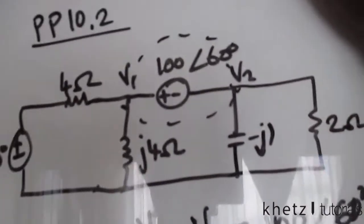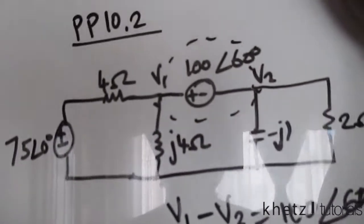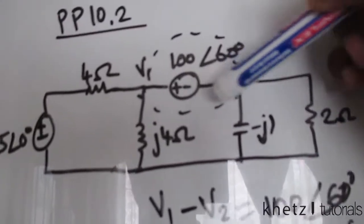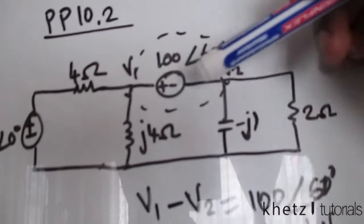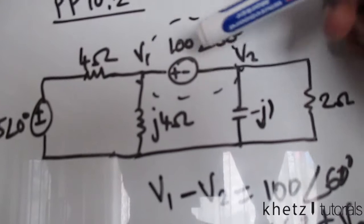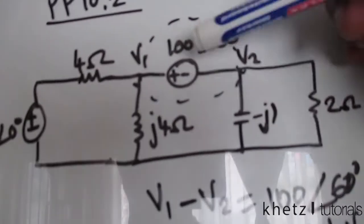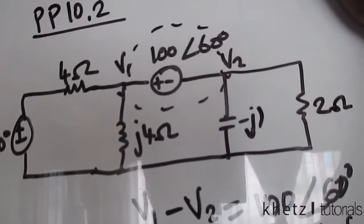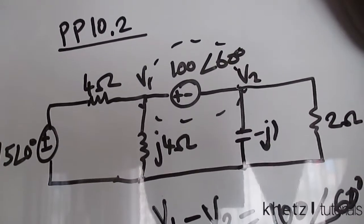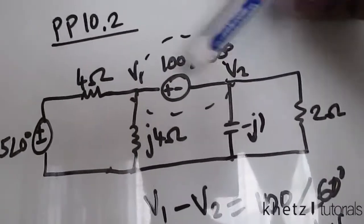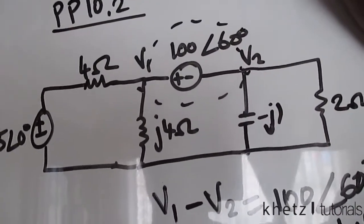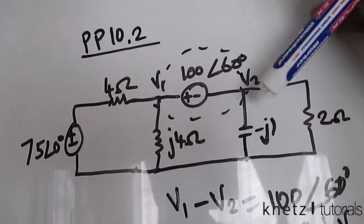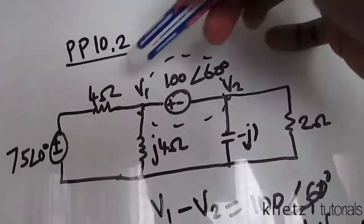The first thing you notice is that we have a super node. There is a voltage source which is in between two nodes, and there is nothing connected between the two nodes other than just this voltage source. So this qualifies as a super node. From the term super node, these two nodes actually become one node, and therefore we're going to form one huge equation which combines the equations of these two nodes.